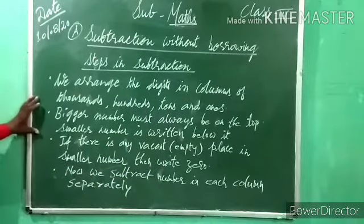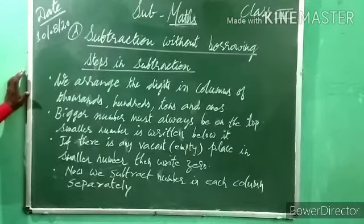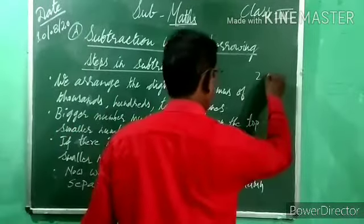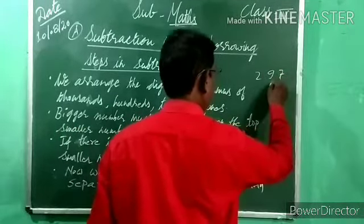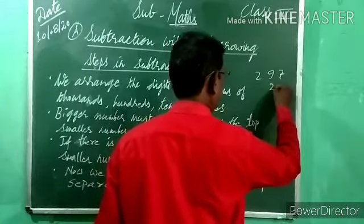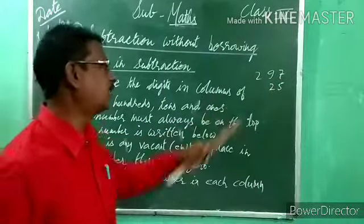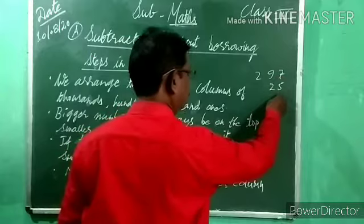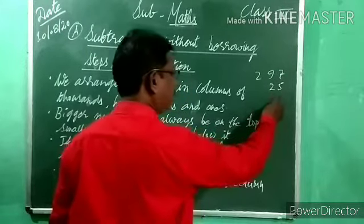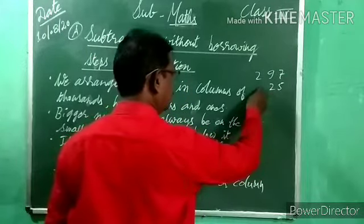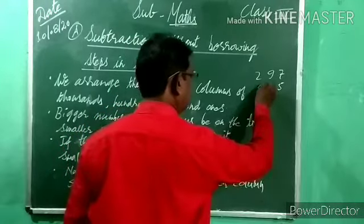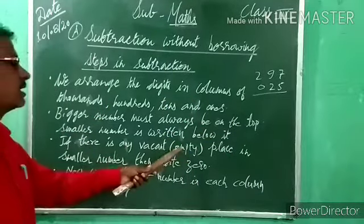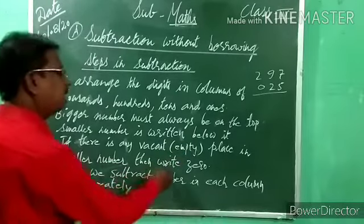Third step: if there is any vacant place in the smaller number, write 0 there. For example, 297 and 25 — 100s place value is 2, 10s is 9, 1s is 7. For 25: 1s is 5, 10s is 2, and the 100s place is empty. So we put 0 in that vacant place.